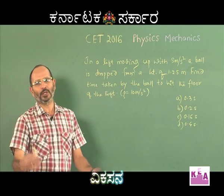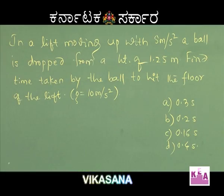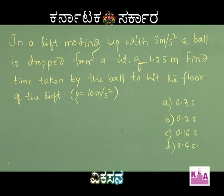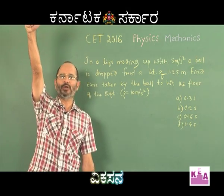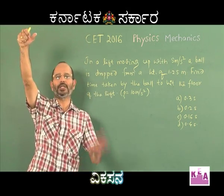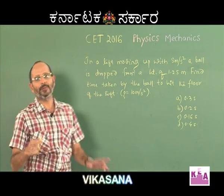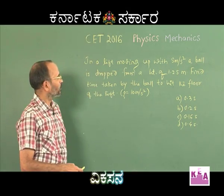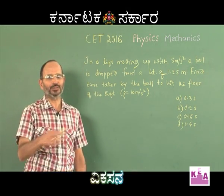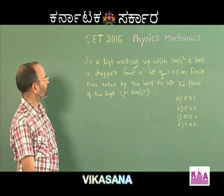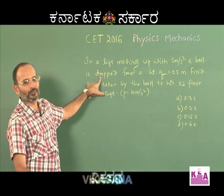There is a small confusion I would love to explain. In a lift moving up with 5 meters per second squared acceleration, a ball is dropped from a height of 1.25 meters. Find the time taken by the ball to hit the floor of the lift. The ball has been dropped from 1.25 meters by a person already inside the lift, and the lift is moving upwards with an acceleration of 5 meters per second squared. The word 'dropped' may confuse you.